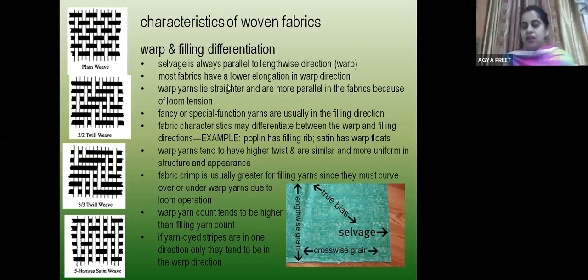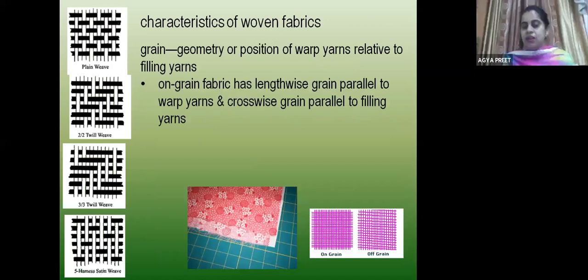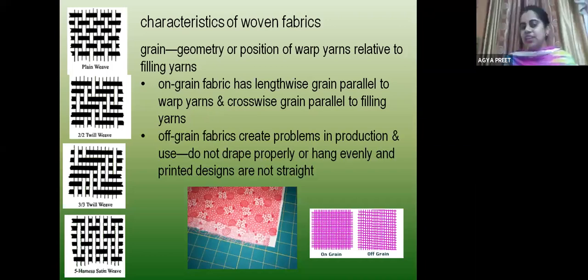Now grain refers to the geometry and position of warp yarn. On-grain is when your fabric is lengthwise and parallel to your warp yarn. Off-grain is when you cut the fabric along the weft direction. We always use on-grain fabric for stitching. If it is off-grain, the drapability will not be good — it won't be straight and if it is printed, it will look weird.